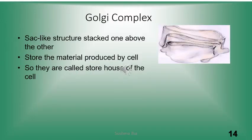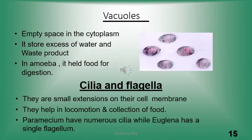Another cell organelle is the Golgi complex. It is a sac-like, bag-like structure stacked one above the other in the form of piles of sacs. It stores material produced by the cell, which is why it is known as the storehouse of the cell. The next organelle is the vacuole — these are empty spaces in the cytoplasm used to store excess water and waste products. In amoeba, they also help in digestion of food.